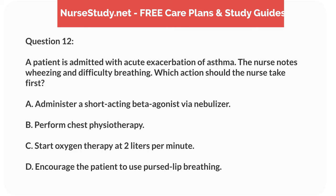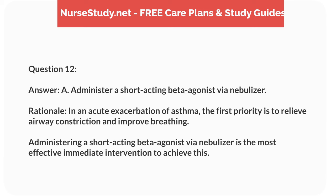Question 12. A patient is admitted with acute exacerbation of asthma. The nurse notes wheezing and difficulty breathing. Which action should the nurse take first? A. Administer a short-acting beta-agonist by a nebulizer. B. Perform chest physiotherapy. C. Start oxygen therapy at 2 liters per minute. D. Encourage the patient to use pursed lip breathing. Answer: A. Administer a short-acting beta-agonist by a nebulizer. Rationale: In an acute exacerbation of asthma, the first priority is to relieve airway constriction and improve breathing. Administering a short-acting beta-agonist by a nebulizer is the most effective immediate intervention to achieve this.